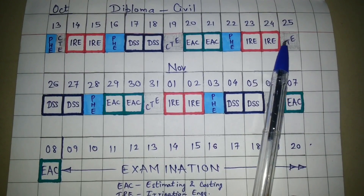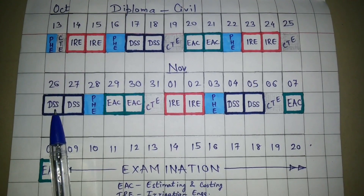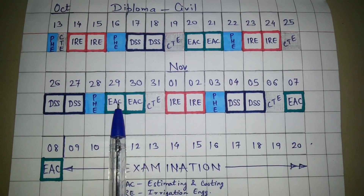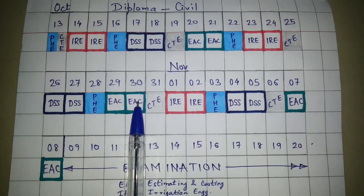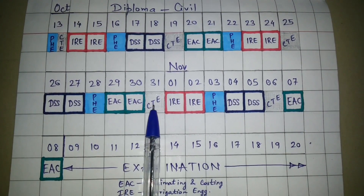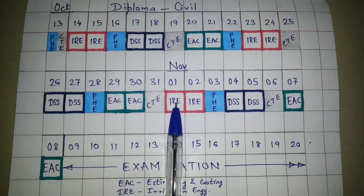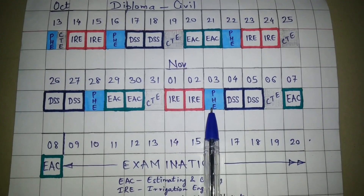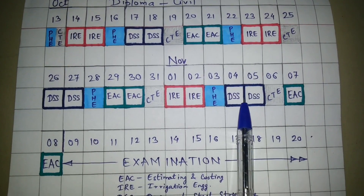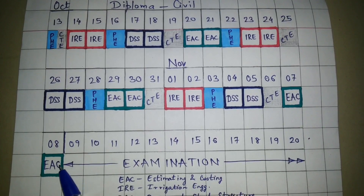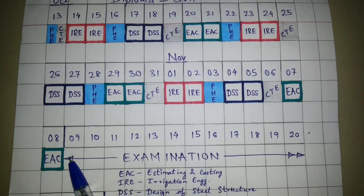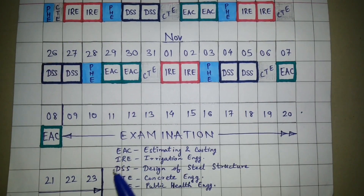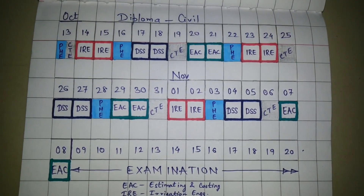Continuing: 24th — IRE, 25th — IRE and CTE, 26th — DSS, 27th — DSS, 28th — PHE, 29th — EAC, 30th — EAC, 31st — CTE. Then November 1st — IRE, 2nd — IRE, 3rd — PHE, 4th and 5th — DSS, 6th — CTE, 7th and 8th — EAC, because on the 9th you have the EAC paper. Your examinations run from the 9th to the 23rd.